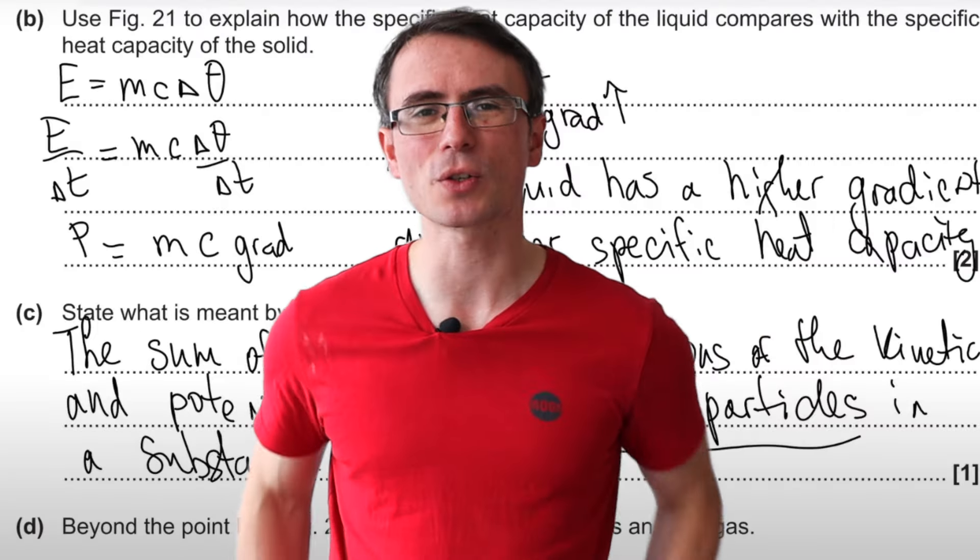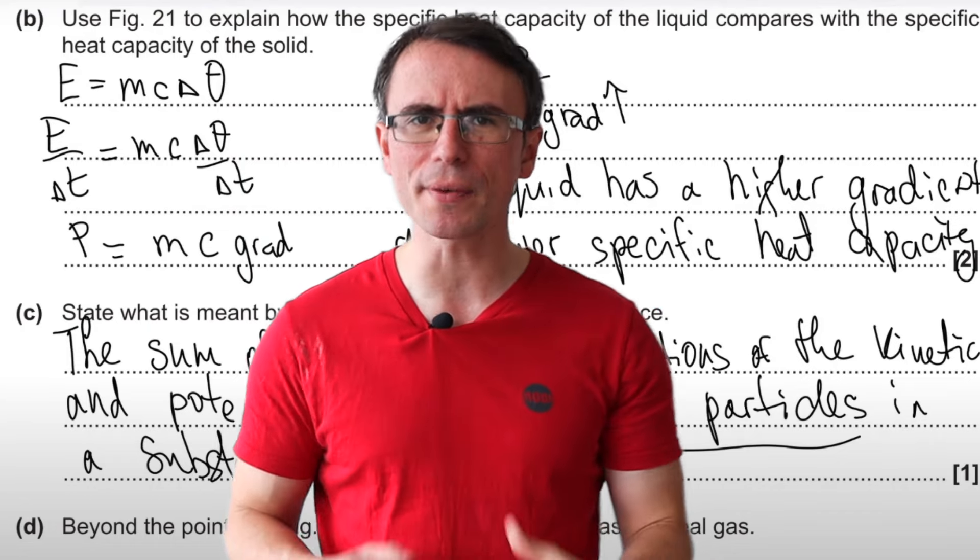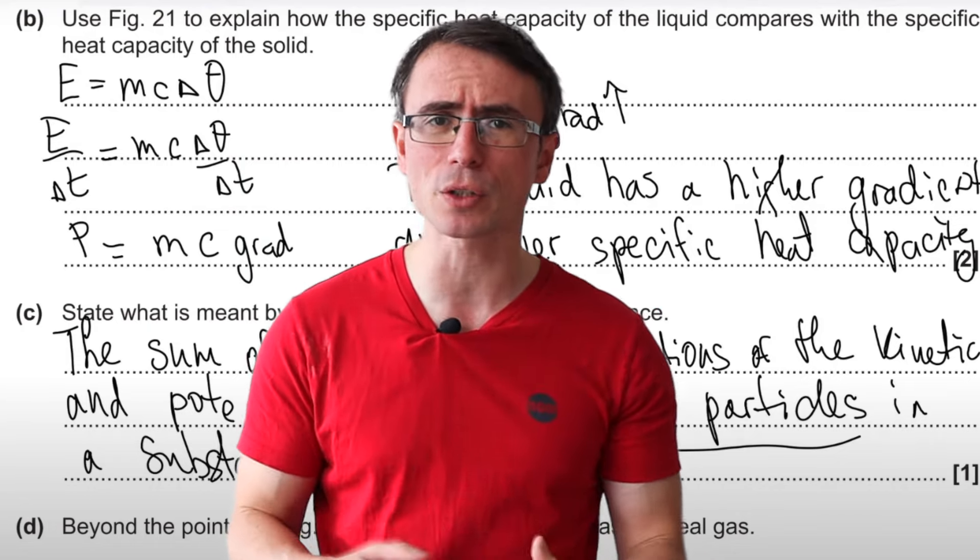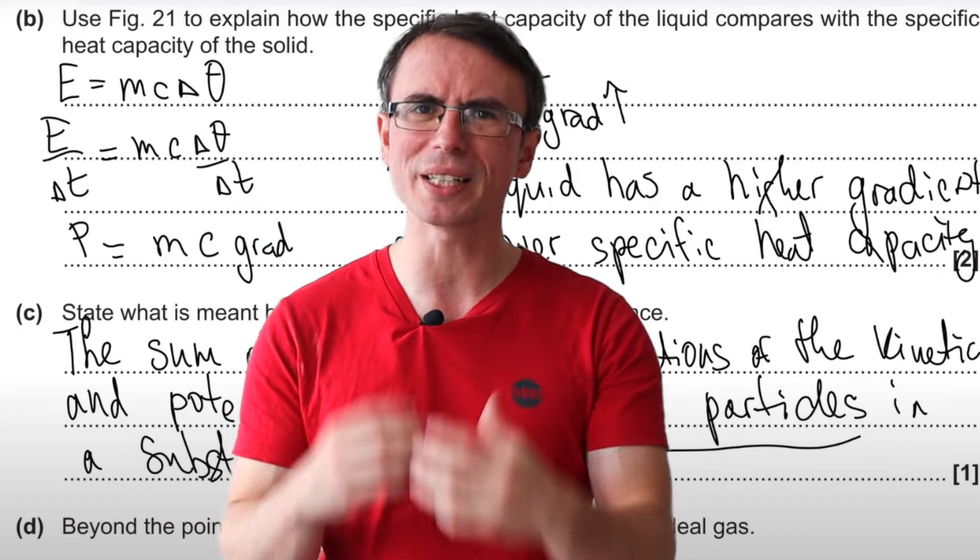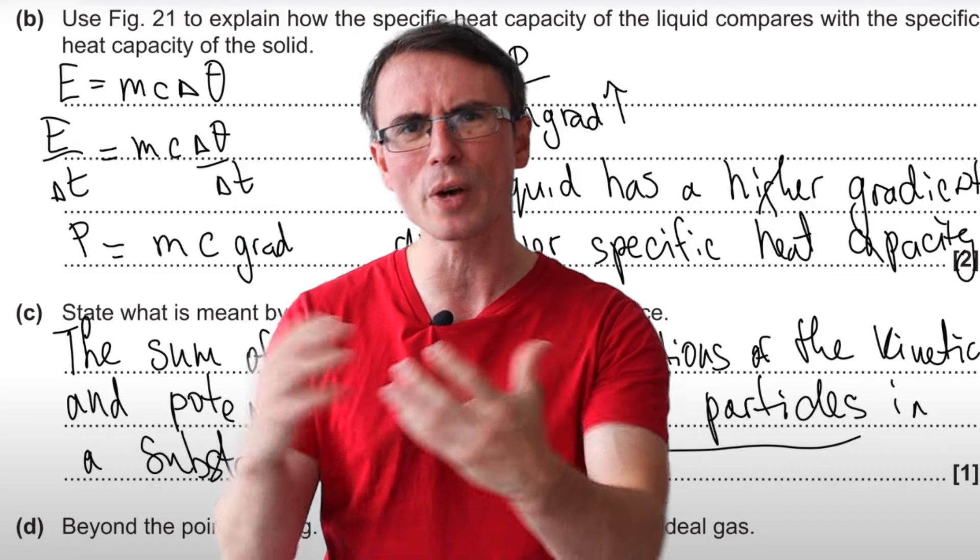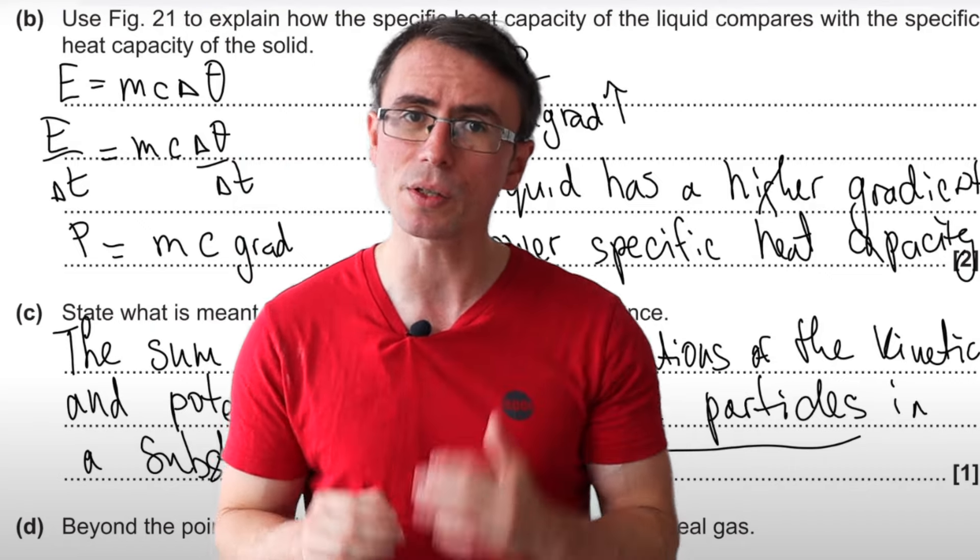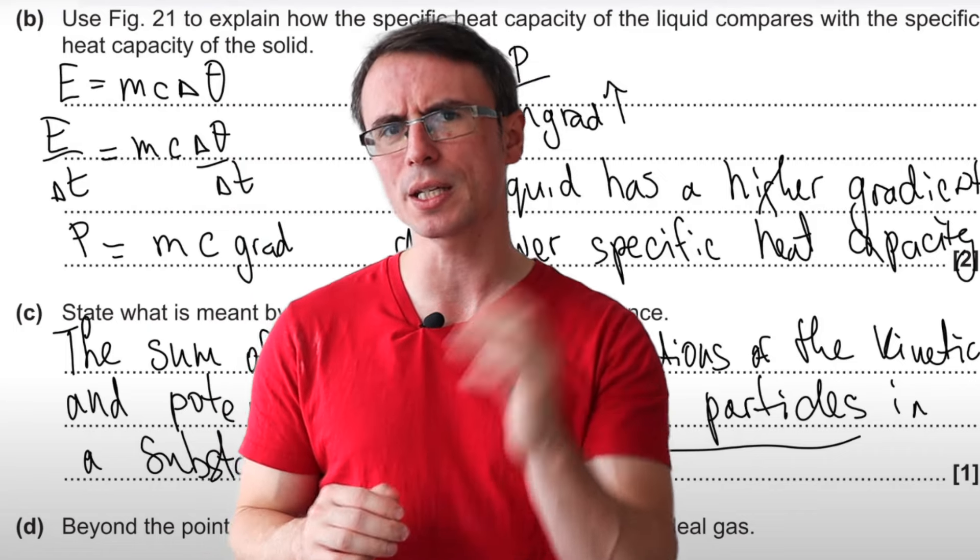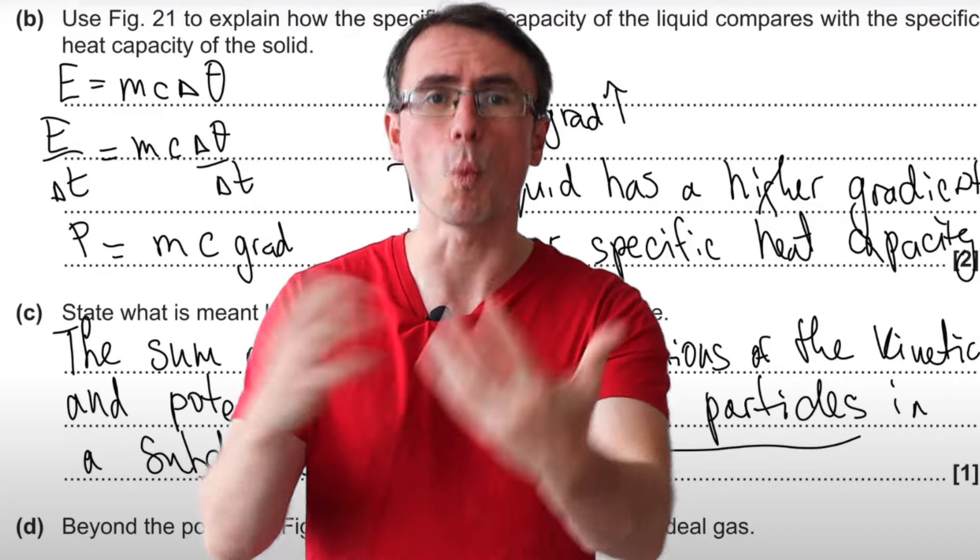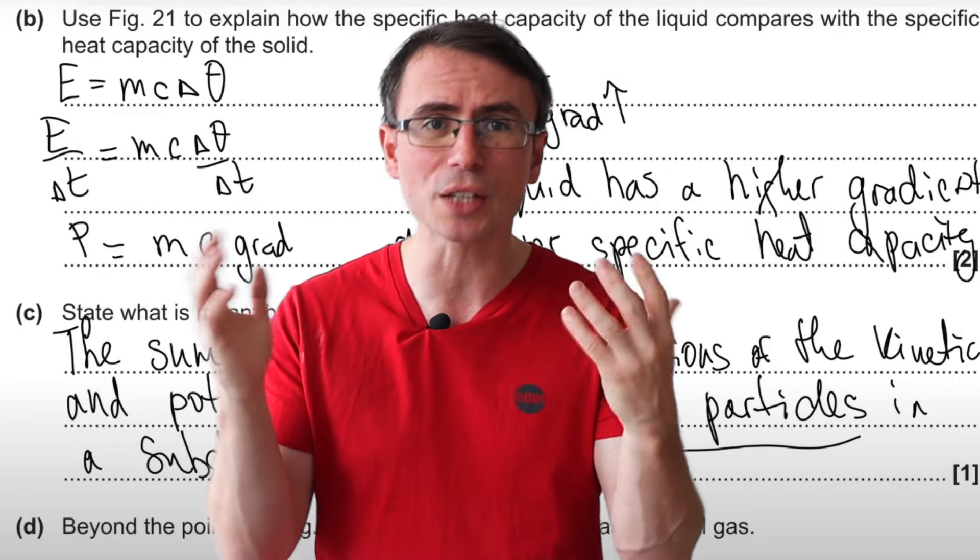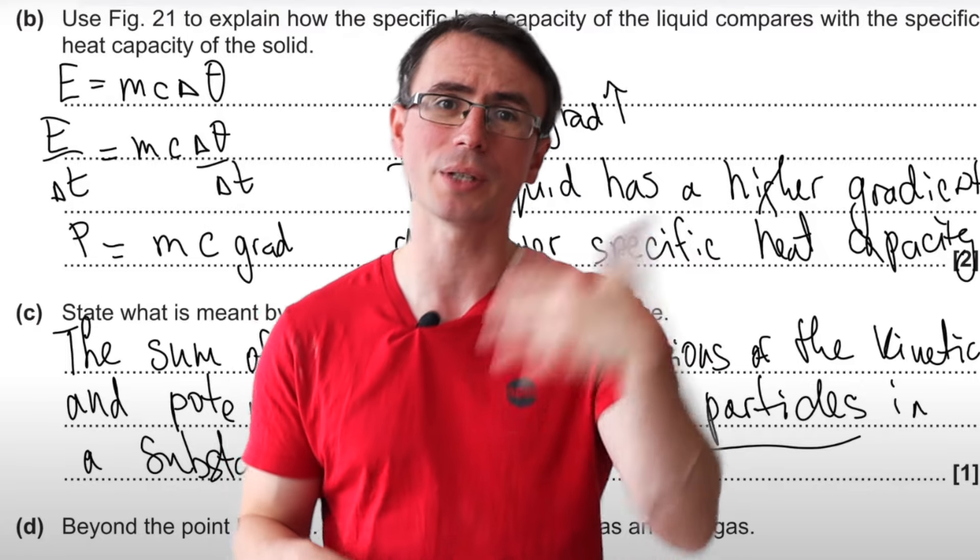Describe and explain questions are often hidden maths questions. What do I mean by that? If you had to describe the effect on a certain quantity and then explain it, well think about an equation which tells you what will happen to that quantity. Then see what the relationship is. If something increases, what's going to happen to the quantity in question? You could even plug in some easy numbers, say 1 and 2, and then actually calculate the result and see whether your quantity has increased or decreased, whether it has doubled, etc.